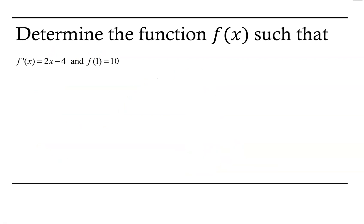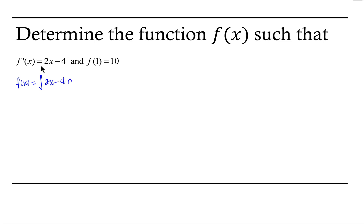Let's look at one more example. In this case, the function that we're looking for has a derivative of 2x minus 4. And when we evaluate it at x equals 1, the output is 10. So let's go ahead and start by using the antiderivative to help us find the function. So our function f of x is going to be the antiderivative of 2x minus 4 dx.